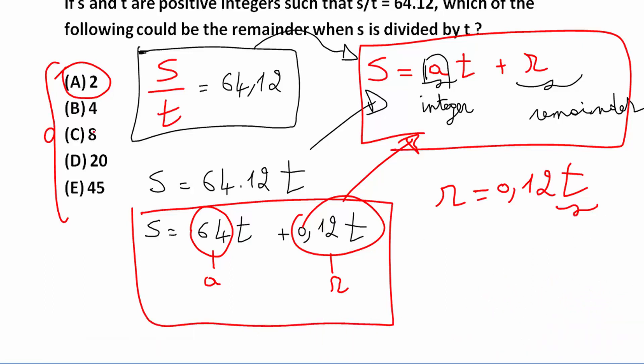So I need to choose one of the answers, and one of them would give me T as an integer. So I need to find which one, when I put it here, when I replace R by it, I will get an integer T. So I have to try them.